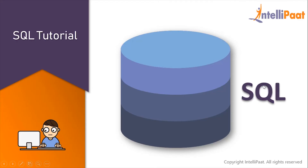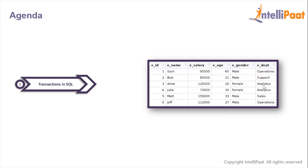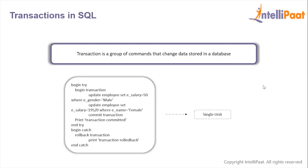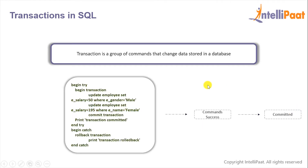Welcome back to this SQL tutorial course. In this session we will learn about transactions in SQL. A transaction is basically a group of commands which will change data stored in a database, and the transaction is treated as one single unit. This ensures that either all of these commands are executed successfully or none of them is. If one of the commands fails, all commands will fail and any data modified will be rolled back. If all commands execute successfully, only then the transaction will be committed. This is how transactions ensure integrity of data.